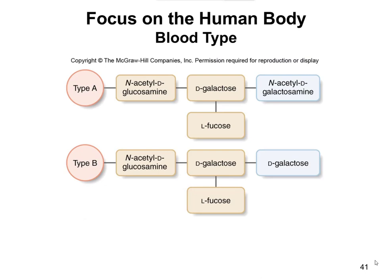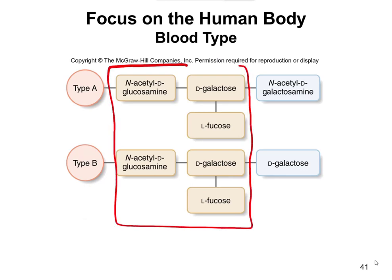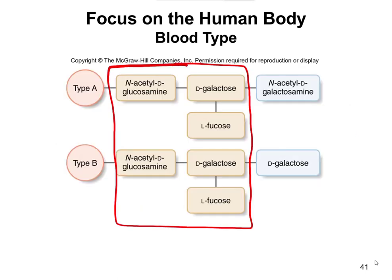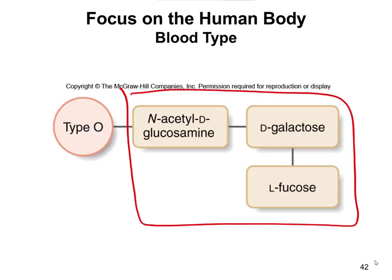Type A and type B have this common core of these three sugars, and even type O has that same common core. Now, coming back to type A: attached to that common core, there is an N-acetyl-D-galactosamine. If you're type B, like I am, there is a D-galactose attached to the other D-galactose. And if you're type O, you don't have anything attached there.